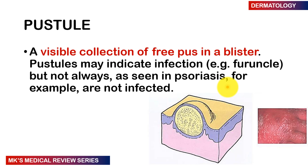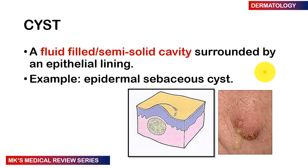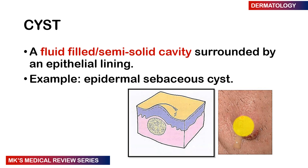A pustule is a visible collection of free pus in a blister. Pustules may indicate infections, as in furuncles — but not always. In pustular psoriasis, particularly on the hands, the pustules are not infectious. A cyst is a fluid-filled or semi-solid cavity surrounded by an epithelial lining, for example an epidermal sebaceous cyst.